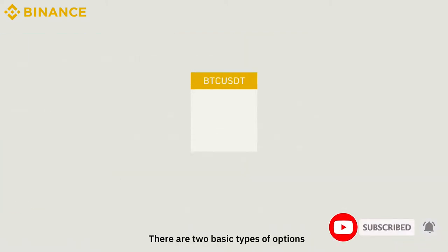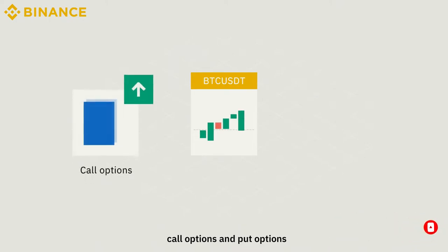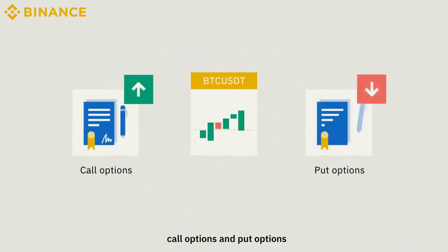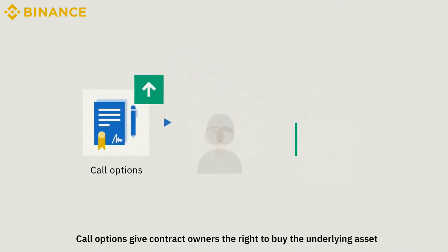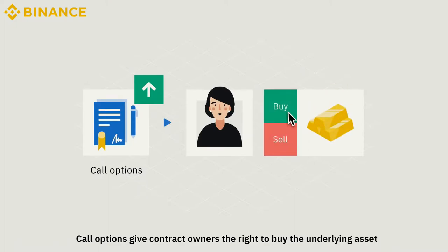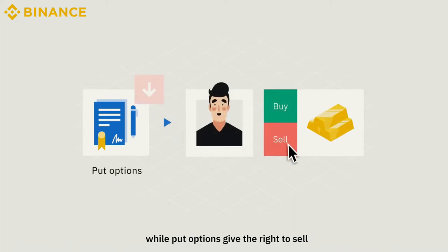There are two basic types of options: call options and put options. Call options give contract owners the right to buy the underlying asset, while put options give the right to sell.